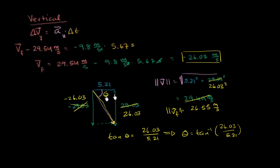So the angle here is 78.7 degrees, and it's below the horizontal. So we can say that the vector, the final velocity vector, has a magnitude of 26.55 meters per second at a direction of 78.7 degrees below the horizontal.